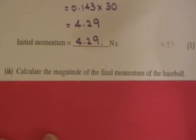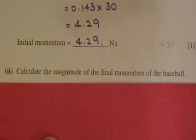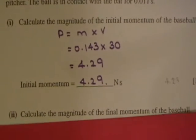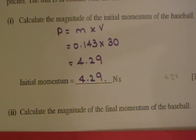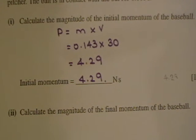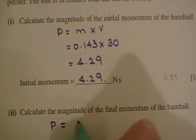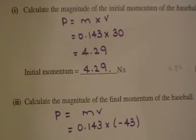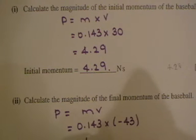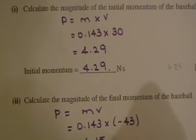Part 2: calculate the magnitude of the final momentum of the ball. We need to make sure we have the direction right. The ball's momentum is mass times velocity; the mass is still 0.143 kg, but its velocity this time is minus 43, giving minus 6.15 N·s because it's moving in the opposite direction.